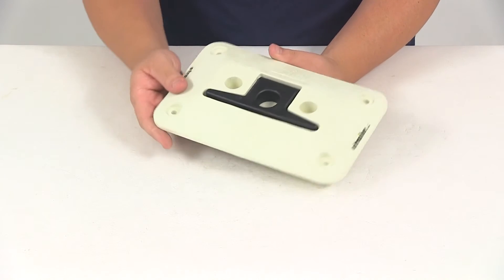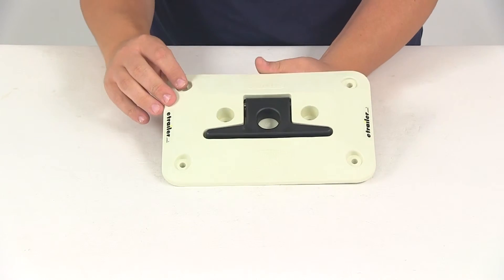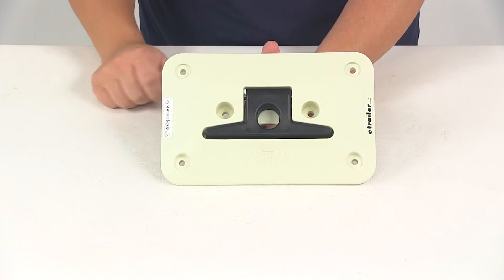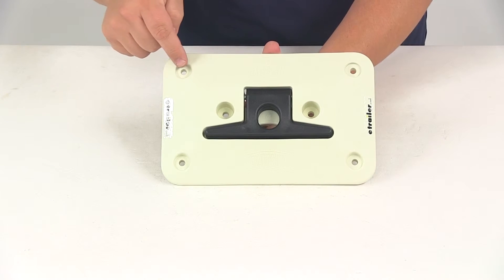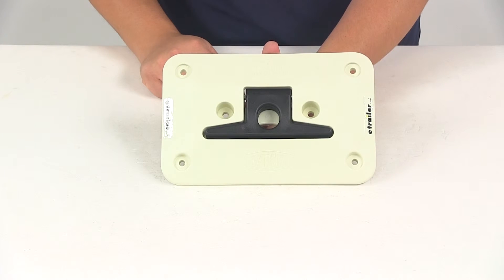Now there's going to be a total of six mounting holes. These mounting holes are going to have an actual hole diameter of a quarter of an inch and they're going to be recessed in a larger hole. That larger hole is going to measure three quarters of an inch in diameter.